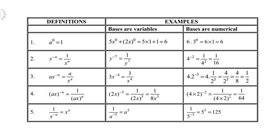Now let's look at a few definitions. Any base to the power 0 equals 1. For instance, 5 times x to the power 0 plus 2x to the power 0: 5 times 1 is 5, and 2x to the power 0 becomes 1, so the answer is 6. Also, 6 times 3 to the power 0 is 6 times 1, which is 6.